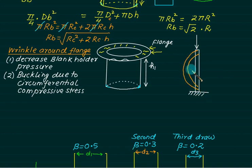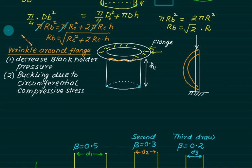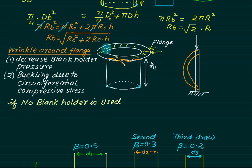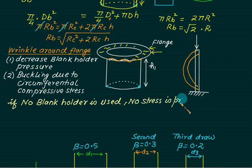If deformation is within the elastic mode, the material returns to its original position after buckling. But in the plastic mode, a permanent wavy shape is produced, which is undesirable. If no blank holder is used, no force is applied on the flange, and therefore no stress is produced in that region.